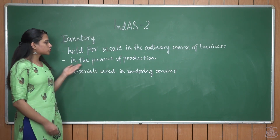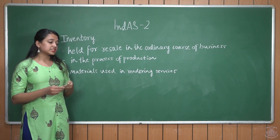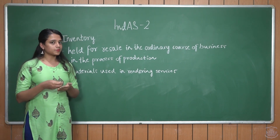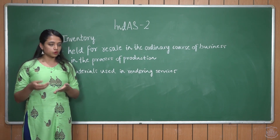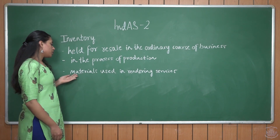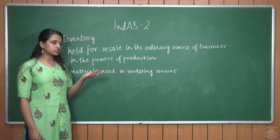In the process of production, for example, cotton which is used in the manufacture of clothes, which is a finished good. Also included are materials which are used in rendering services.